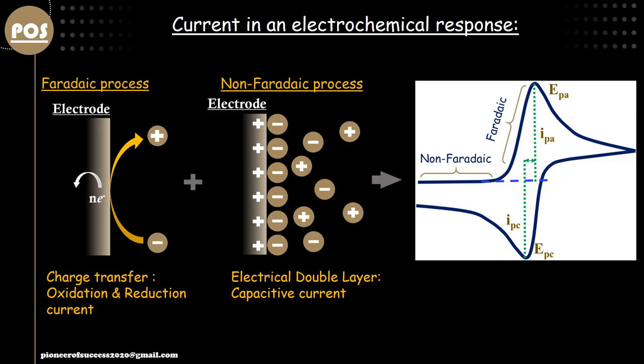To understand DPV in further detail, we have to know about two processes: the Faradaic Process and the Non-Faradaic Process. In a Faradaic Process, a true redox reaction undergoes onto the electrode, and during the redox reaction, exchange of electrons takes place. That electron actually goes through the external circuit, giving us a sudden surge in current — giving rise to a peak in both CV and DPV whenever a Faradaic reaction takes place.